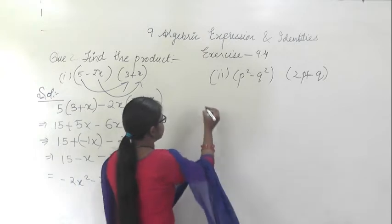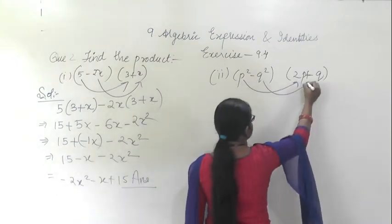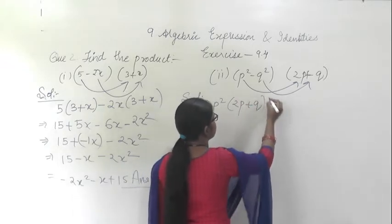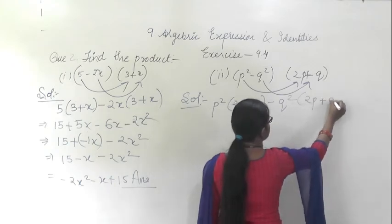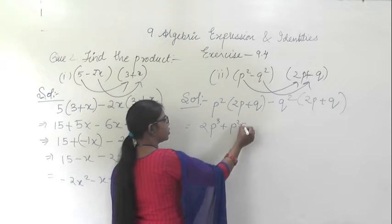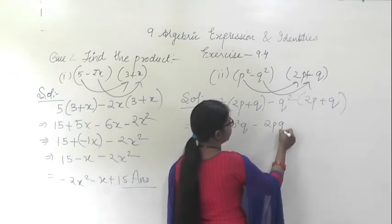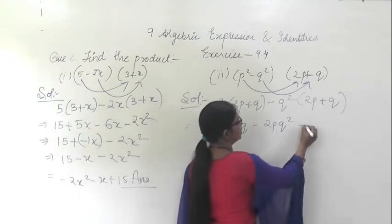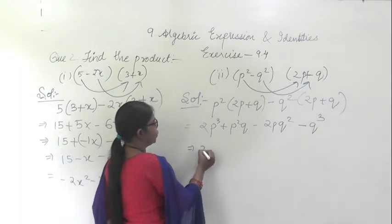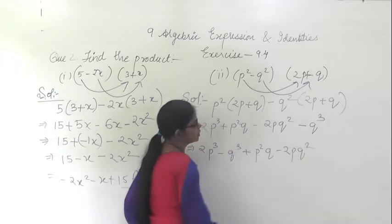In the second question, (p squared minus q squared) is to be multiplied with (2p plus q squared). First p squared will be multiplied, then q squared will be multiplied with the whole term. Write down: p squared into (2p plus q) minus q squared into (2p plus q). Multiply inside: p squared into 2p is 2p cubed, plus p squared q, minus 2p q squared, minus q cubed. Arrange: 2p cubed minus q cubed plus p squared q. This is the answer.